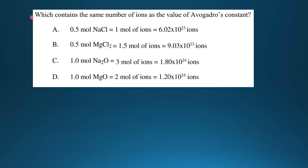The first multiple choice question asks: which contains the same number of ions as the value of Avogadro's constant — A) 0.5 moles of NaCl, B) 0.5 moles of MgCl2, C) 1.0 moles of Na2O, or D) 1.0 moles of MgO? Starting with A: sodium chloride consists of 2 ions, Na⁺ and Cl⁻. So 0.5 moles multiplied by 2 gives 1 mole of ions, which equals 6.02 x 10²³ ions. So A is the correct answer.